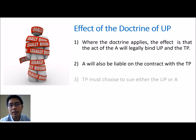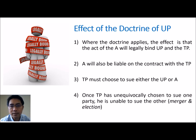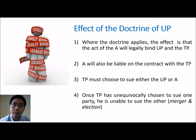However, the third party cannot sue both parties. The third party has to make an election — a choice — to sue either the undisclosed principal or the agent. The law will not allow double compensation. Once the third party has unequivocally chosen to sue one or the other, the two rights merge into one. We call this the doctrine of merger and election, and the effect is that the third party is unable to sue the other party.